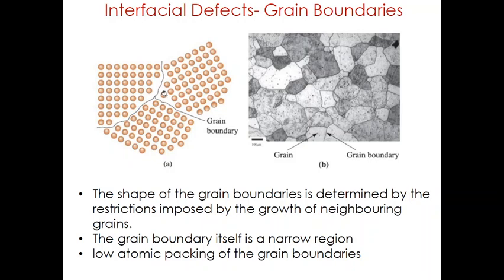The lower atomic packing of the grain boundary also allows for more rapid diffusion of atoms in the grain boundary region. At ordinary temperatures, grain boundaries also restrict plastic flow by making it difficult for the movement of dislocations — the grain boundary acts as an obstacle for the plastic deformation process. Various degrees of crystallographic misalignment between adjacent grains are possible. When the orientation mismatch is slight, on the order of a few degrees, it is termed a low-angle grain boundary; if the mismatch is on the order of higher degrees, it is called a high-angle grain boundary.